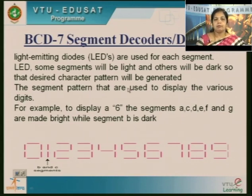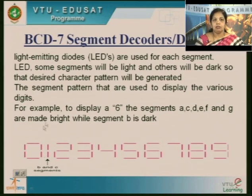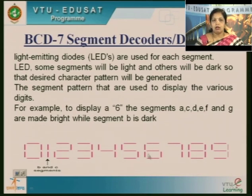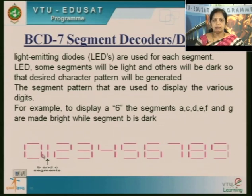The segment pattern is used to display various digits. To turn on a particular segment, the LED will be on. For example, to display character 6, I need to turn on A, C, D, E, F, and G — only except one segment B, all other segments should be turned on to display 6. Similarly, I can display from 0 to 9. Based on what pattern you want to display, that particular segment will be made high or turned on. For displaying 1, only B and C segments are used.